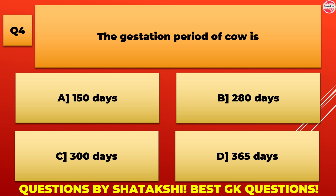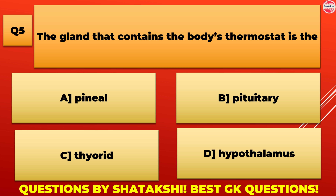The gland that contains the body's thermostat is the: A. Pineal gland, B. Pituitary gland, C. Thyroid gland, D. Hypothalamus gland. D. Hypothalamus gland is the correct answer.